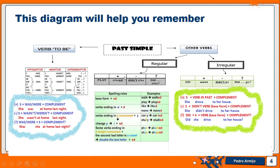Now let's see the structure for negative, interrogative, and positive forms. In the positive form with regular verbs, I add '-ed.' In the negative form, I need the auxiliary verb 'didn't.' In the question form, I also need the auxiliary verb 'did.' With irregular verbs it's the same, but the difference is that irregular verbs change form in the past. In negative and question forms, I still need an auxiliary verb.